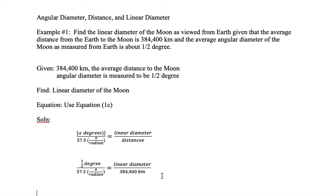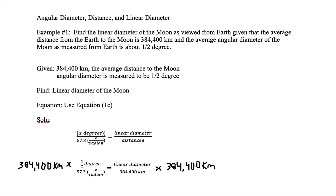Now we need to apply some algebra. We multiply both sides of the equation by 384,400 kilometers and solve for linear diameter. If we multiply both sides by 384,400, the right hand side cancels out and we're left with linear diameter on one side and all the rest on the opposite side.